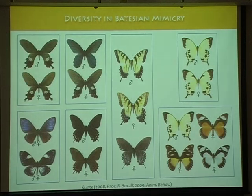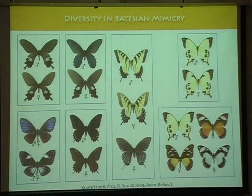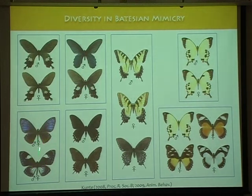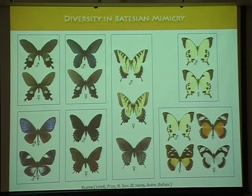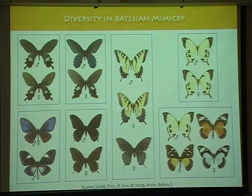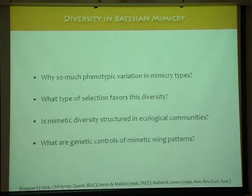There is tremendous diversity in Batesian mimicry. Here on this campus we'll see dozens of mimetic species; globally we know at least a few hundred species. This is just a selection of butterflies from one family. In some butterflies you have sexually monomorphic mimicry; in others only the female is mimetic. There is polymorphism where both males and females have a particular form, and cases where the male mimics one species and the female mimics another — sexually dimorphic mimicry. There is also polymorphic mimicry where only one sex mimics.